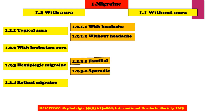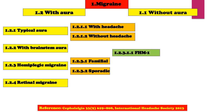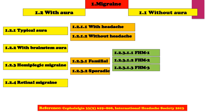Familial Hemiplegic Migraine is further classified into Familial Hemiplegic Migraine Type 1, Type 2, Type 3, and Type 4, where other gene loci are involved.